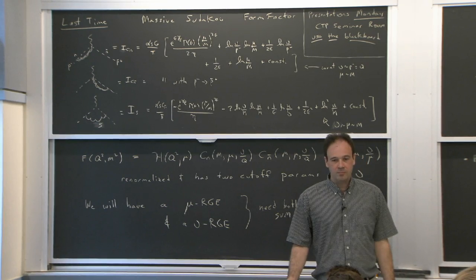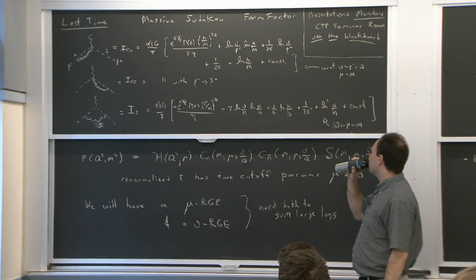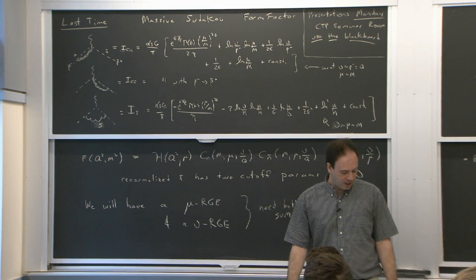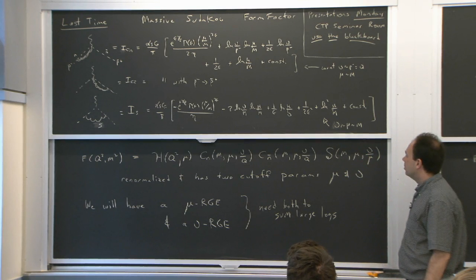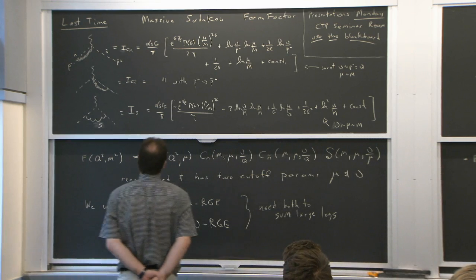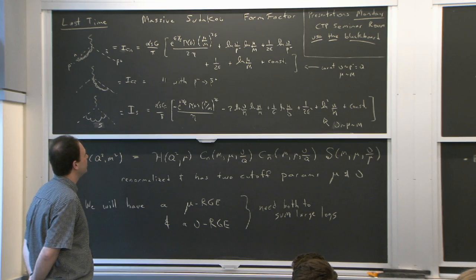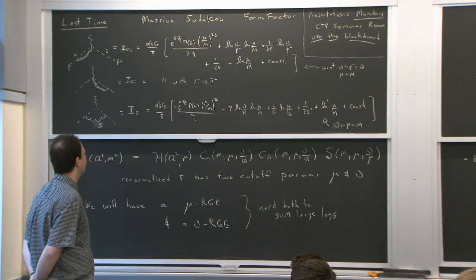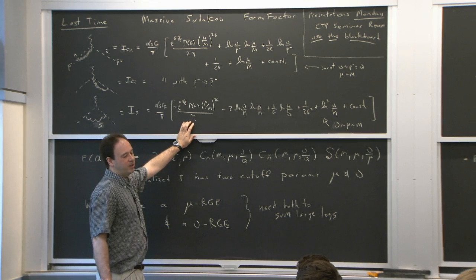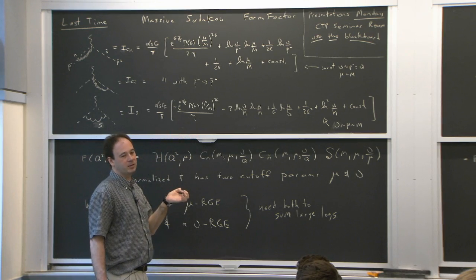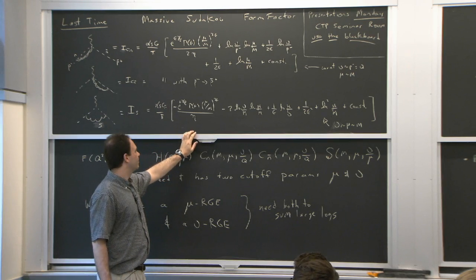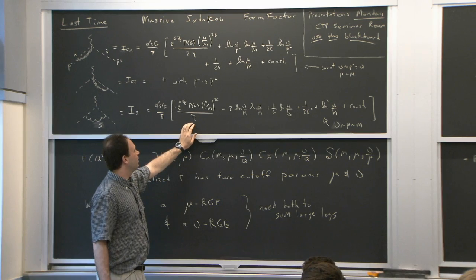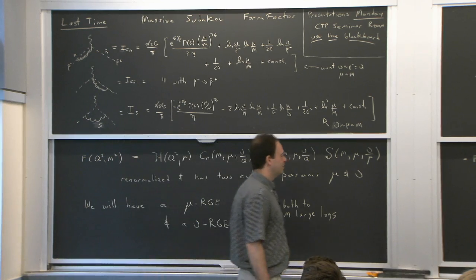There's also path independence: because nu and mu are independent parameters, the choice of path doesn't matter. You could go over then up, or up then over — the result is the same. This is related to the fact that the order of derivatives can be switched. There are examples in effective field theories where you have two apparent cutoffs but really only one path; but in this SCET2 case, there really are two independent cutoff parameters.